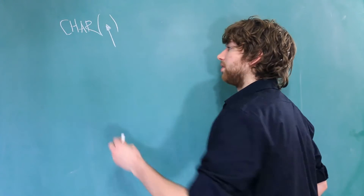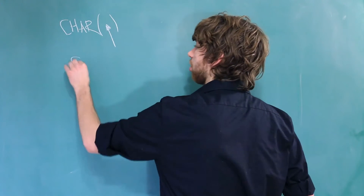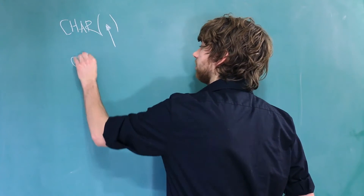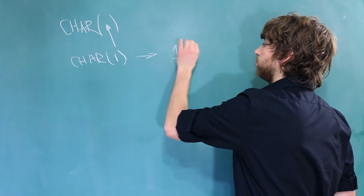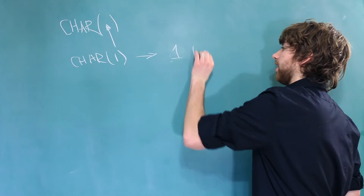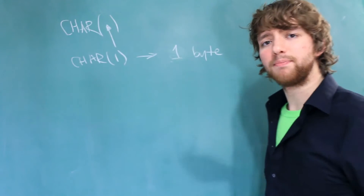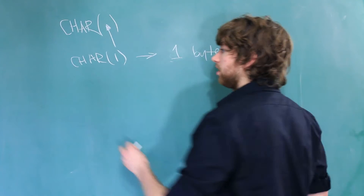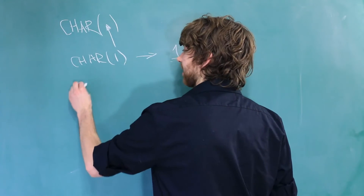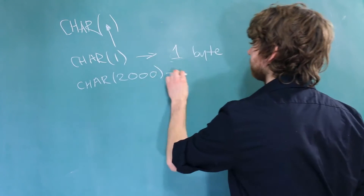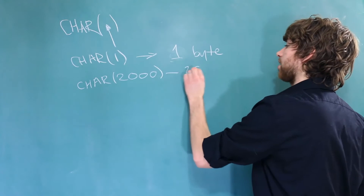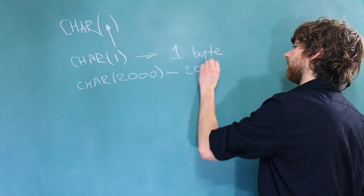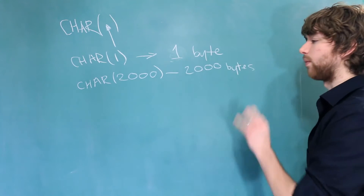The lowest is CHAR(1), and this would allow up to 1 byte of data. The maximum is actually 2,000, and this would allow up to 2,000 bytes of data.